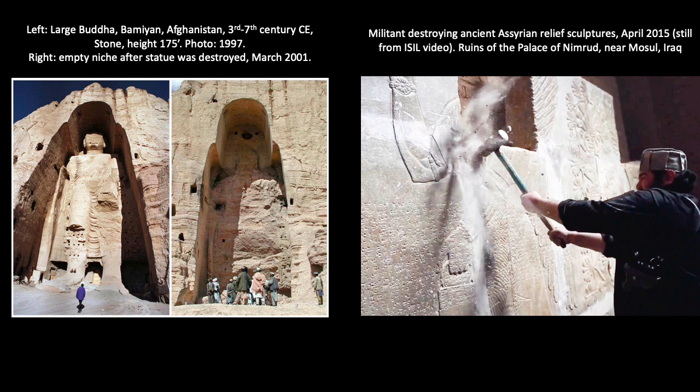For example, Islamic belief objects to making representational imagery because it usurps the creative power of Allah, and because images can lead to idolatry or the worship of the images themselves. Generally, Muslims avoid representational imagery in religious contexts, such as in the Quran or in mosques, but fundamentalist regimes have often interpreted those beliefs more strictly, using them to forbid all representational imagery no matter the context, but especially when the images represent religious or spiritual things.